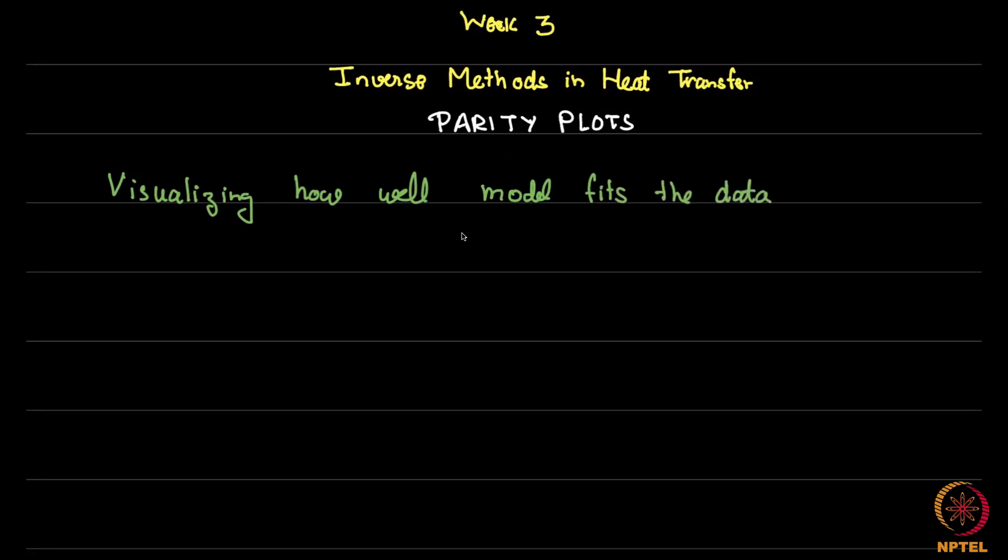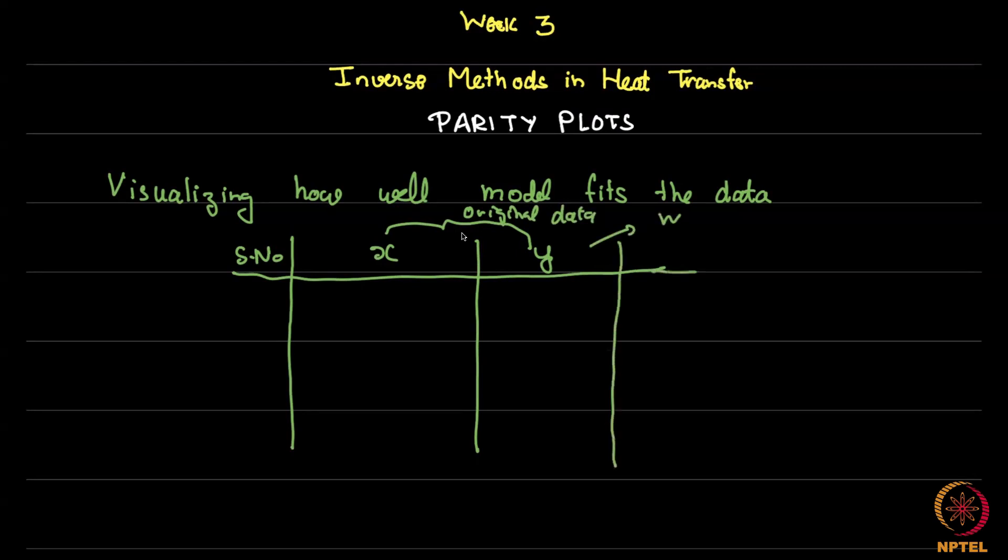For instance, what we have been doing so far is we have this serial number, we had some original data, this is the truth, the original data. We use the original data to solve for some parameters and use this parameter back in order to make a model prediction.